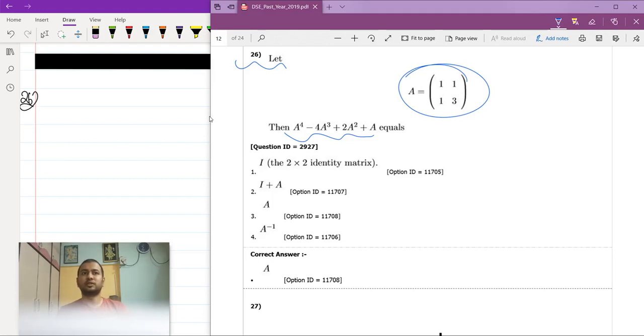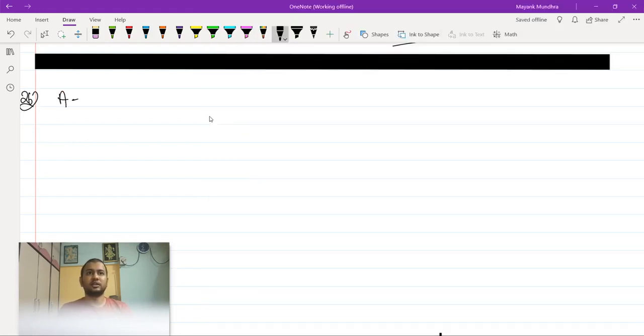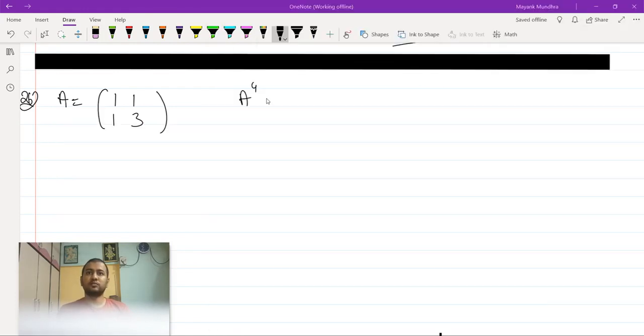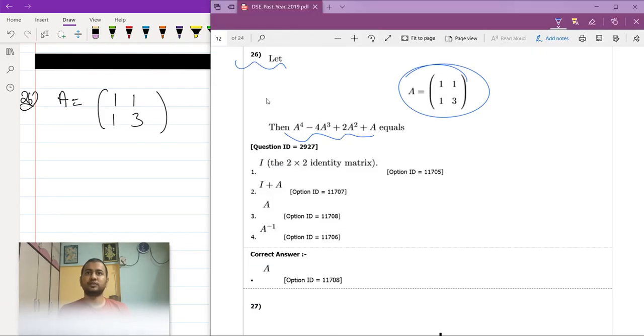So the only option that I have is you have to find the matrix A is [[1,1],[1,3]] and you have to find - sorry not A square - you have to find A to the power 4 minus 4A cube plus 2A square plus A.